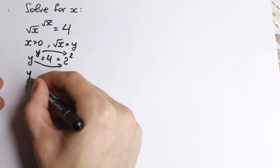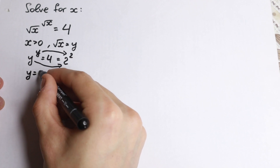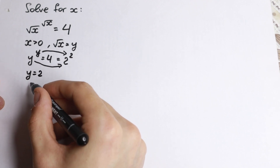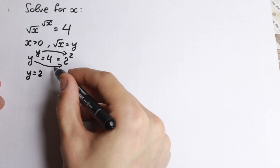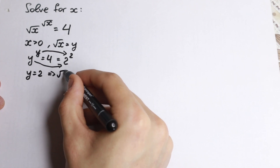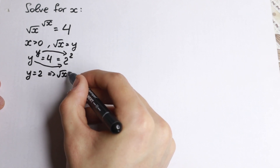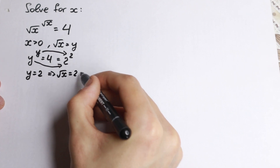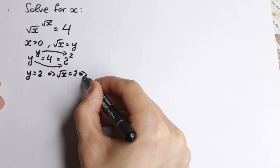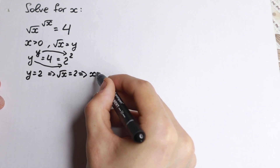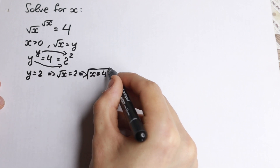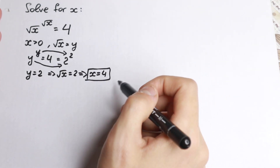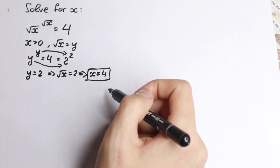Our y equals 2, and from here we go back with the substitution: y equals 2 means square root of x equals 2, so x equals 4. It looks like we solved it, but how can we prove there is only one solution?